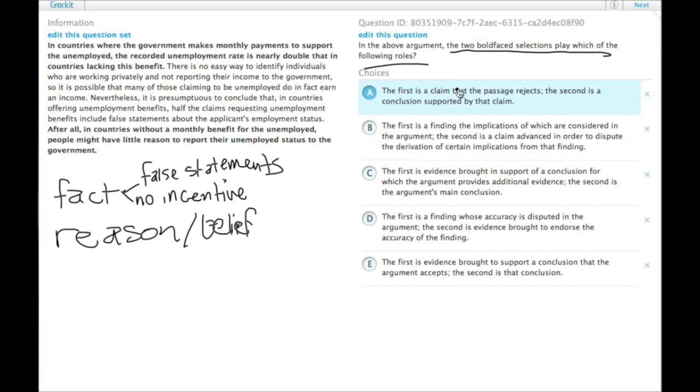The first is a claim that the passage rejects. No. It's actually a fact. We can get rid of that. B. The first is a finding, the implications of which are considered in the argument. We can accept that.